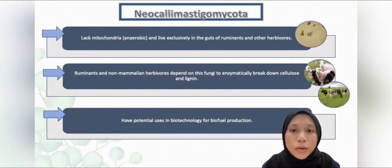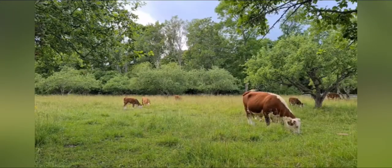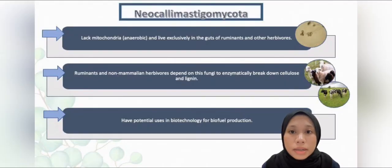The second fungi phylum is Neocallimastigomycota. These neocallimastigomycetes, like mitochondria, are anaerobic and live exclusively in the guts of ruminants and other herbivores. Ruminants like sheep and cows and non-mammalian herbivores like some lizards depend on this fungi to enzymatically break down cellulose and lignin. Without this fungi, these animals would not be able to obtain sufficient nutrition and calories from their plant-based diets.